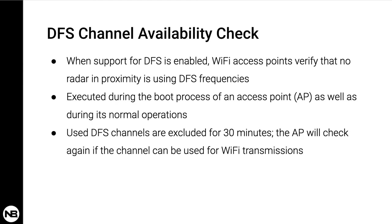If an AP detects during normal operations that a radar is using a particular channel that is currently in use, then it might communicate to associated Wi-Fi clients to stop transmitting on that channel. The AP will then switch to another available DFS channel within the channel move time, which is generally set to 10 seconds.